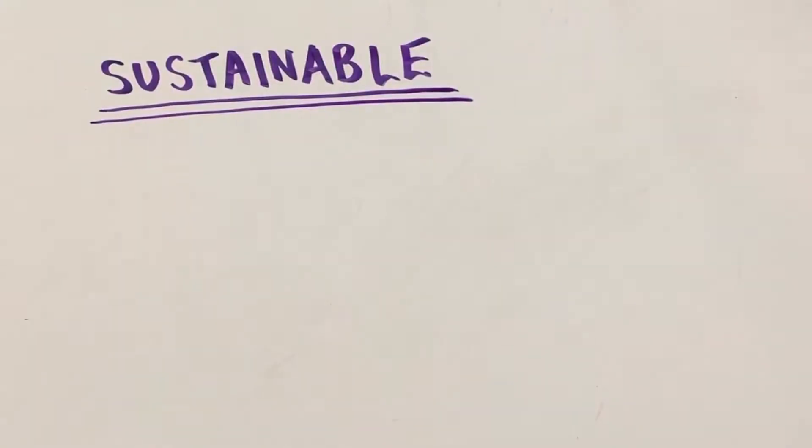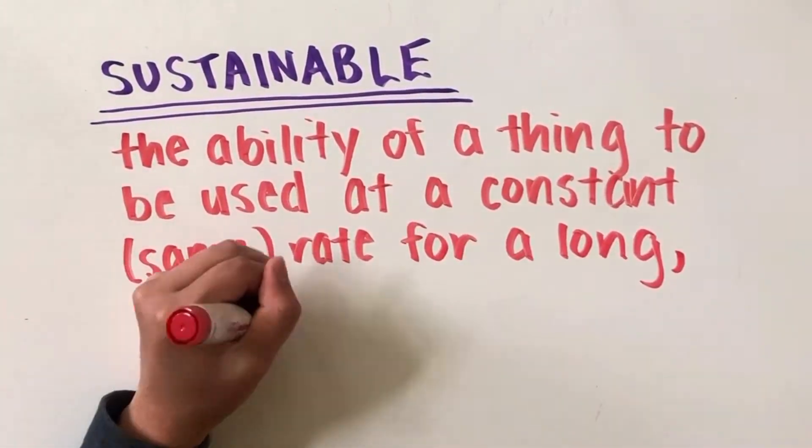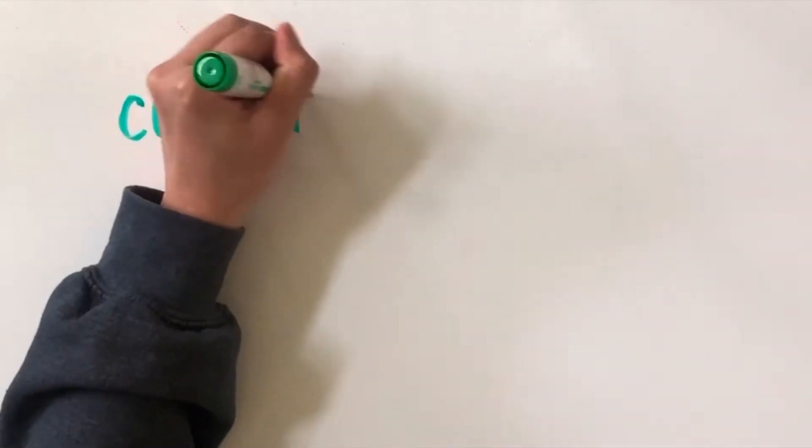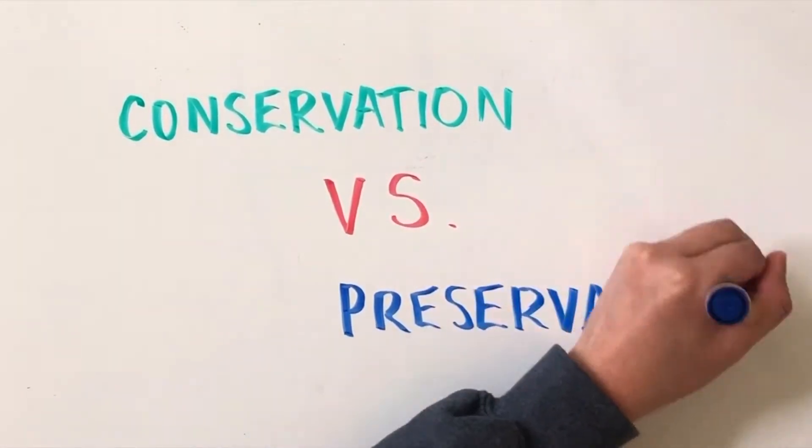For something to be sustainable, it means it has the ability to be used at a constant or the same rate for a long time. Along with the word conservation, you may also hear the word preservation. So what's the difference?